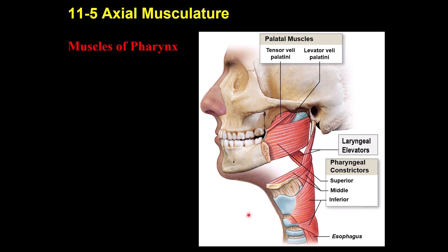There are some muscles for the pharynx and larynx. A couple of muscles cause elevation of the soft palate: tensor veli palatinae and levator veli palatinae — both cause elevation of the soft palate. This muscle causes elevation of the larynx, which is important during swallowing. These three muscles are the pharyngeal constrictors — they narrow the pharynx, which is also important for swallowing: the superior, middle, and inferior constrictors.